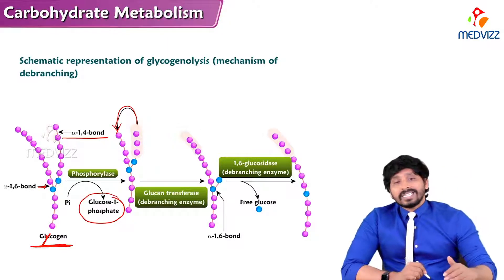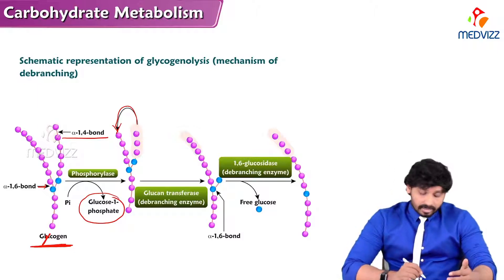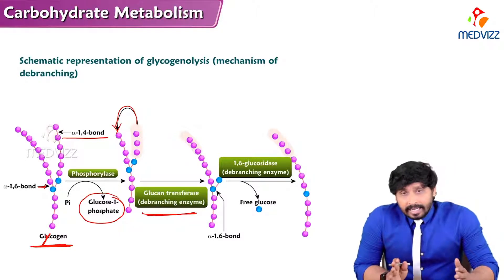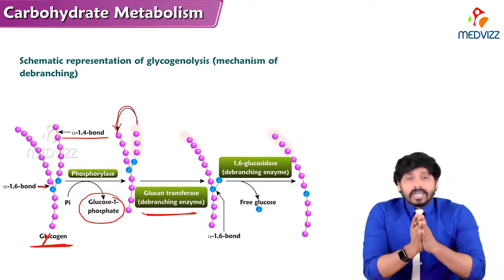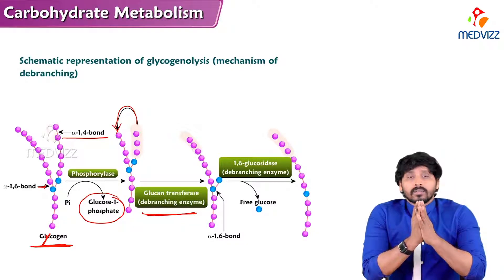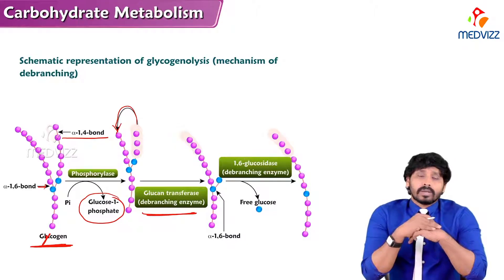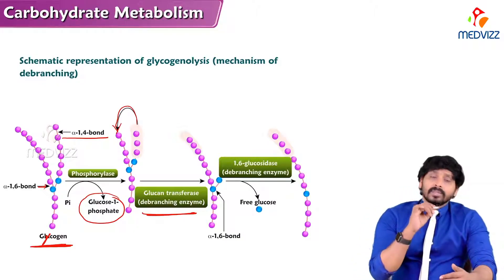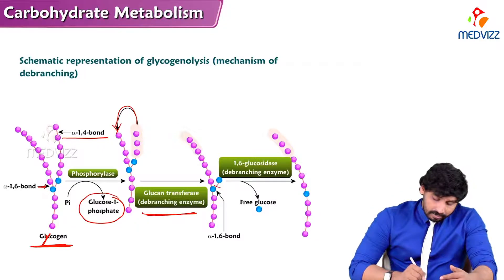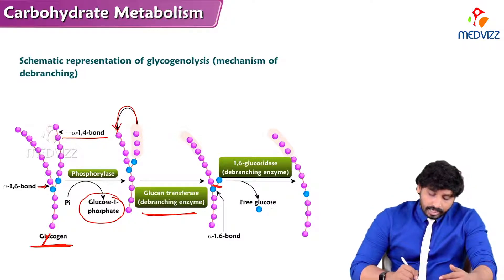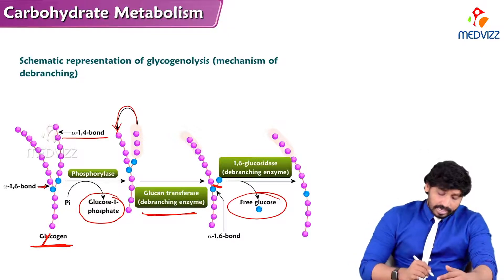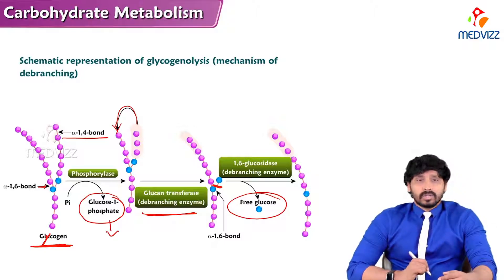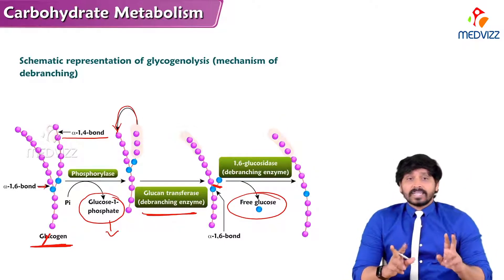There is another enzyme — glucan transferase, that means the de-branching enzyme. This de-branching enzyme removes the 1,6 glycosidic linkage. Remember: phosphorylase will remove only 1,4 glycosidic linkages and make again 1,4 glycosidic linkages. But glucan transferase will remove whatever branching point is there, break that branching point, and removes 3 glucose units. In case of phosphorylase, you will not get 3 free glucose — only glucose 1-phosphate will be produced.